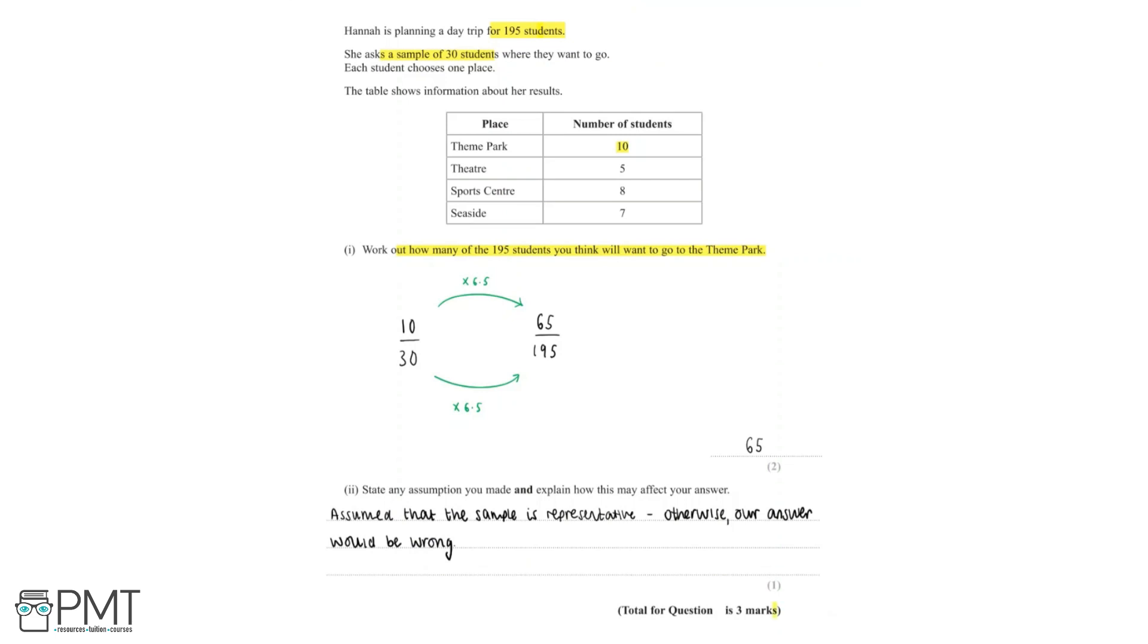Now this question is worth 3 marks. We get the 1 mark for doing 10 multiplied by 6.5 in order to find how many of the 195 students you think will want to go to the theme park. We get the 2nd mark for getting the correct answer of 65.